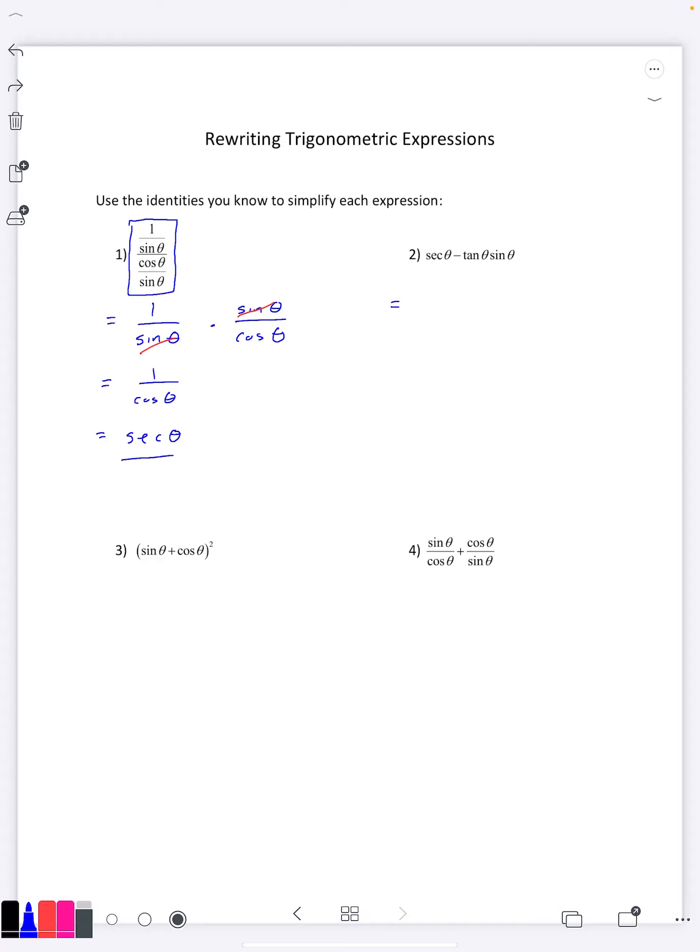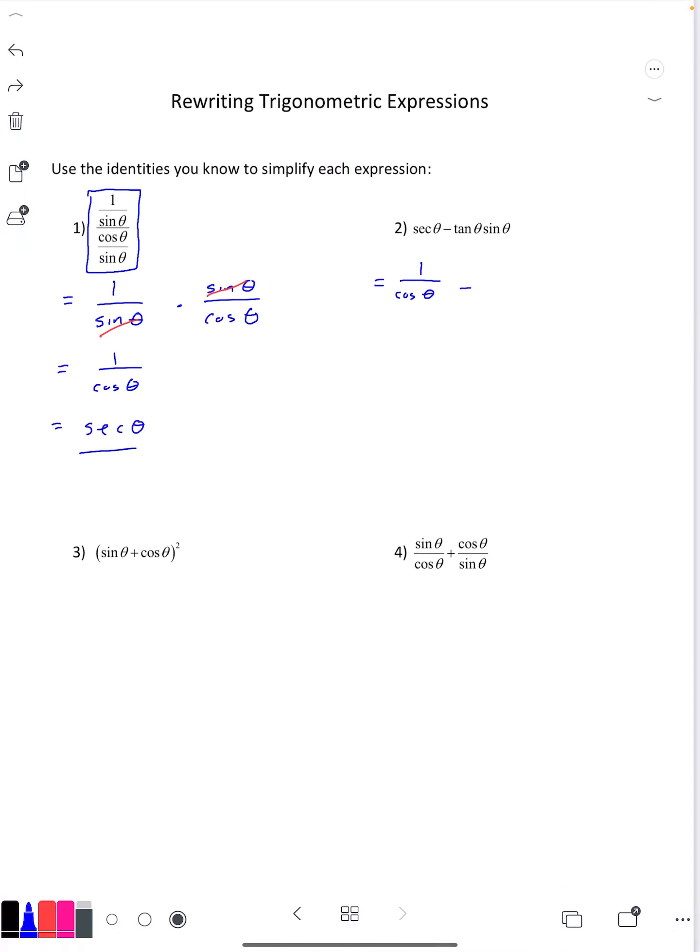So from the reciprocal identity, secant theta is one over cosine theta. From the ratio identity, tangent theta is sine theta over cosine theta, multiplied by sine theta.